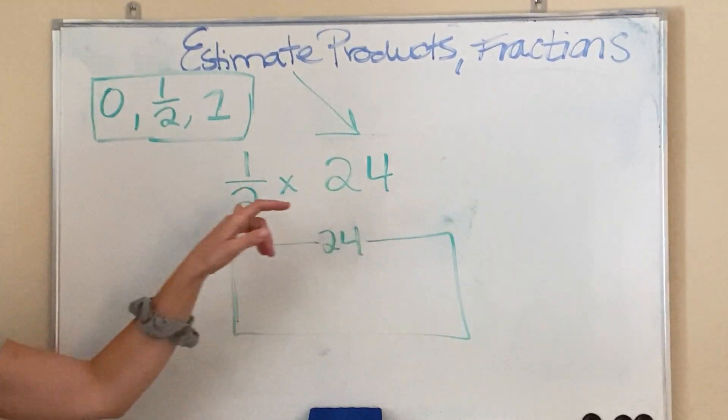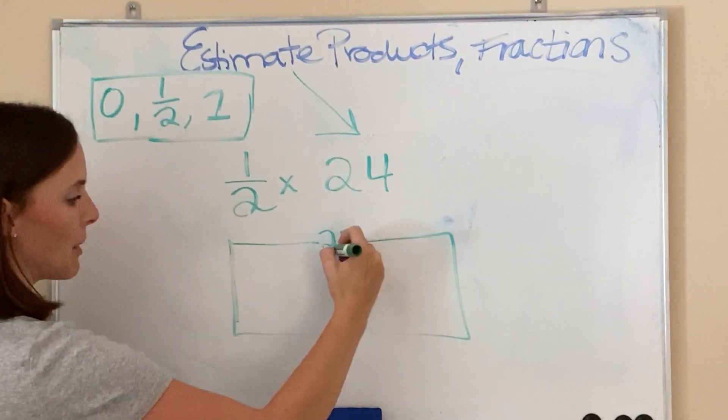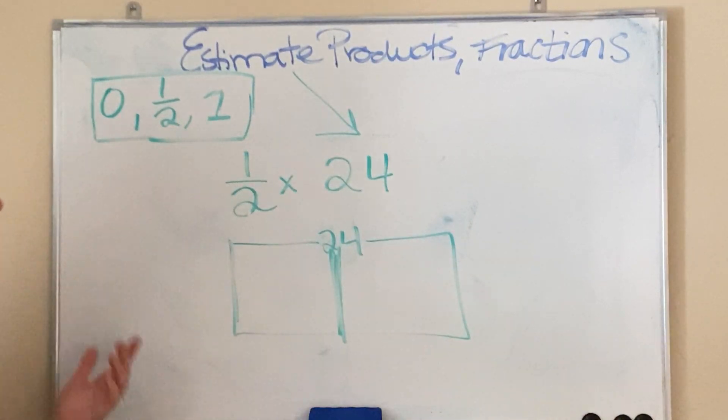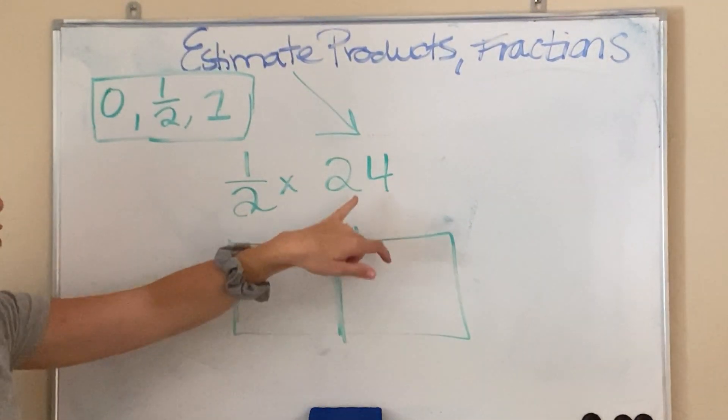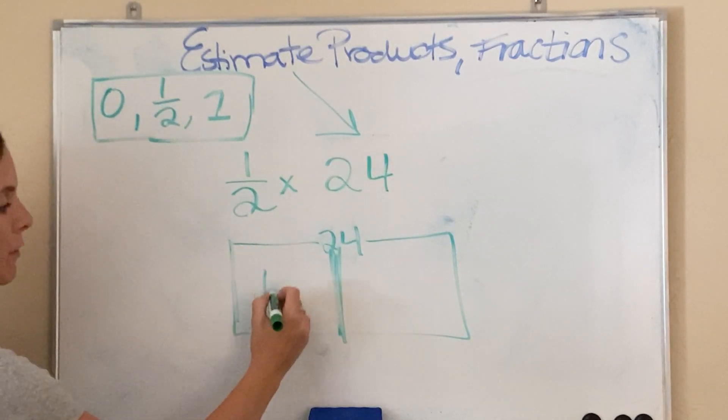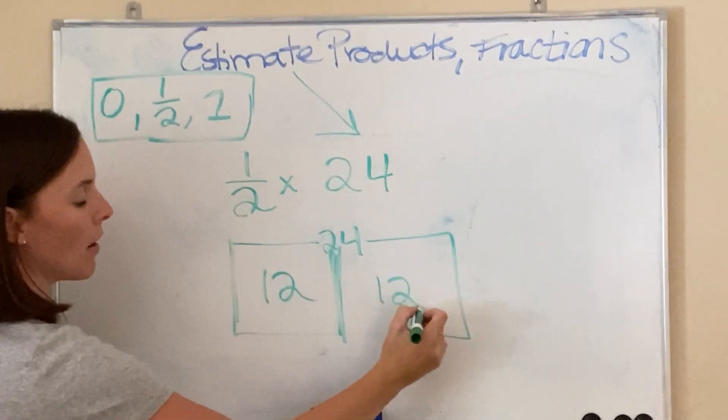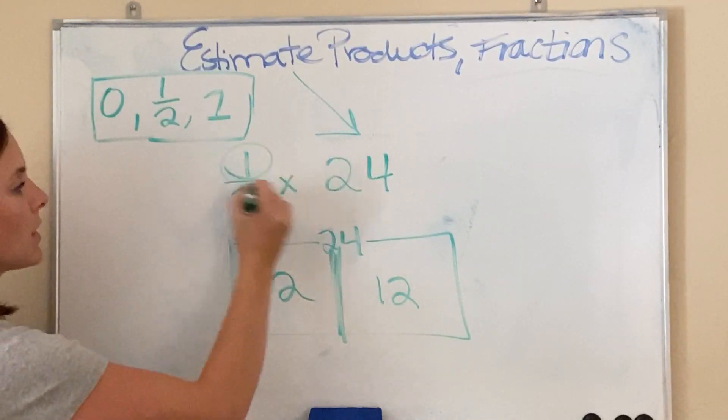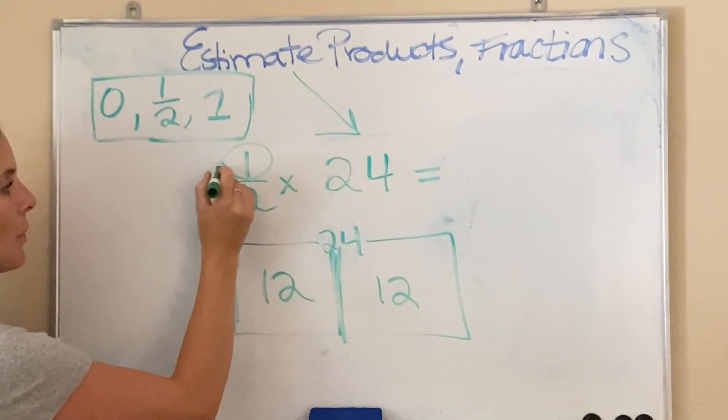So, 24 is my whole. I'm going to go ahead and break it up into two even pieces because that's my denominator. And now I need to divide them to see how much goes in each. 24 divided by 2 is 12.